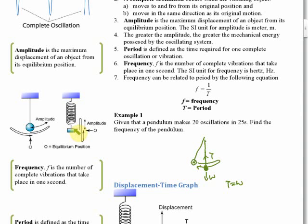The equilibrium position is also where the oscillating system would stop if it stopped oscillating. For example, if the pendulum is not oscillating, the pendulum bob will be in the middle. Equilibrium position is important for finding amplitude — we'll discuss that later.